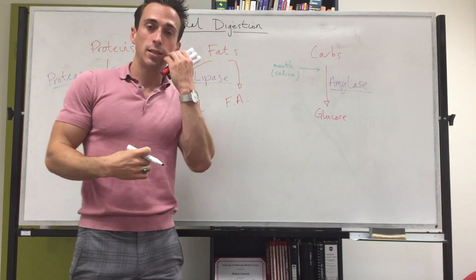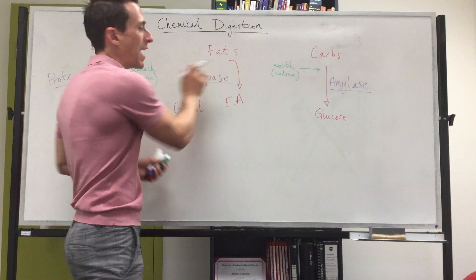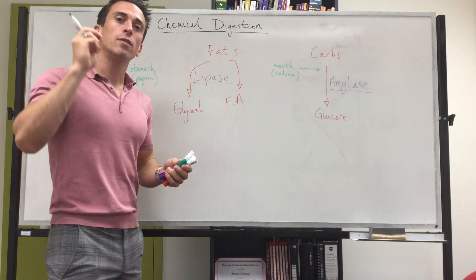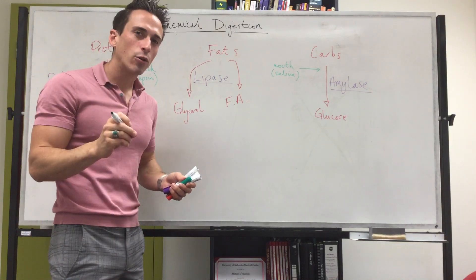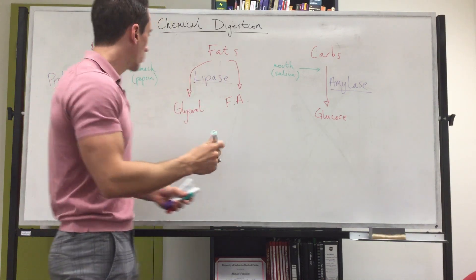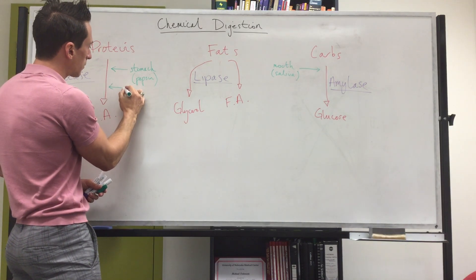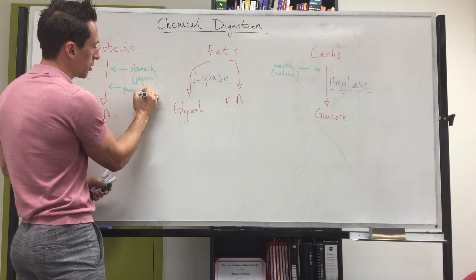From the stomach we move to the small intestines. Now the small intestines is the first site of fat digestion and it's because of the pancreas. The pancreas actually releases all three types of enzymes.